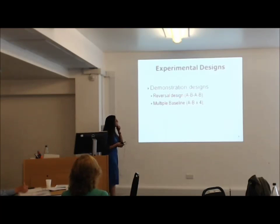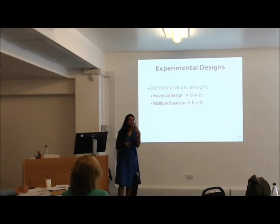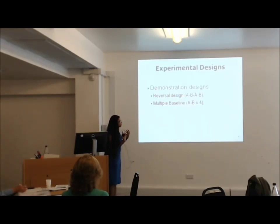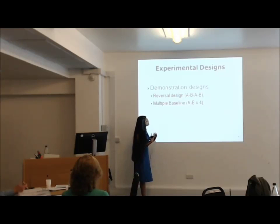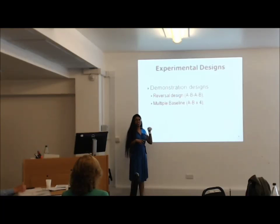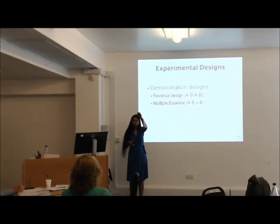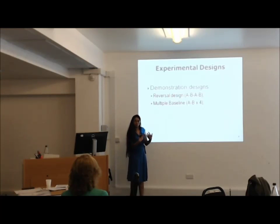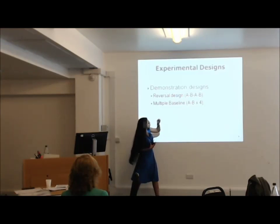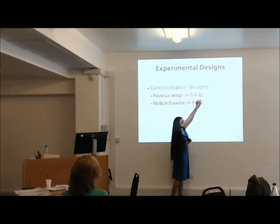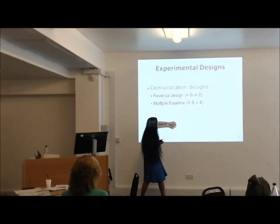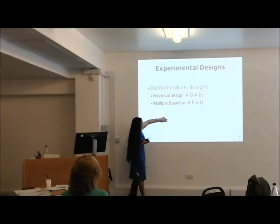An AB design alone won't have a lot of validity — there are so many threats to it. When you have an ABAB design, it becomes harder to argue against when the data really shows: A phase — a lot of problem behaviors; B phase — very few; A phase again — a lot; B phase again — very few. It becomes a tighter, more waterproof design. You have shown three demonstrations of effect: A to B, B to A, and A to B again.